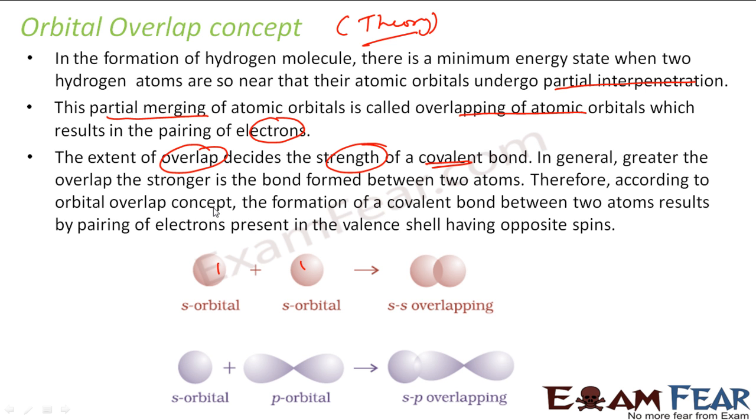According to the overlap concept, the formation of covalent bonds is the result of pairing of electrons that are present in the valence shell of two different atoms having opposite spins. There is one spin here, one spin here. I am talking about the valence shell. They overlap and get something like this.